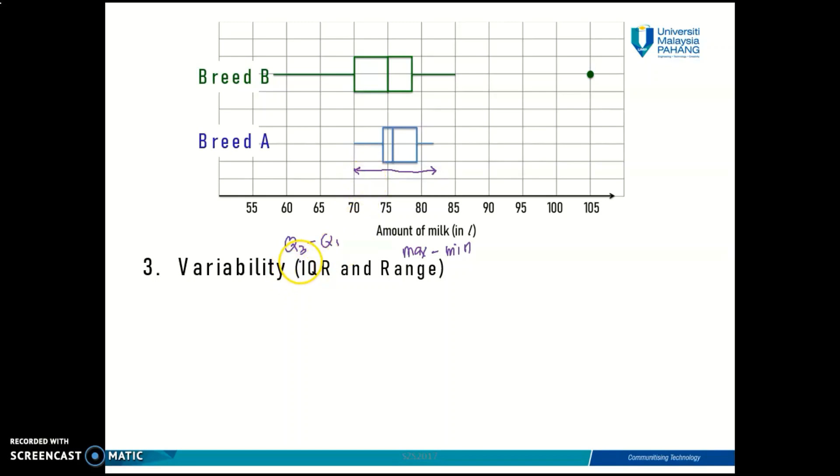And for IQR, you can do the same thing. You can see that the IQR for breed B is from quartile 1 until quartile 3. And same goes for breed A. The IQR is from quartile 1 until quartile 3.